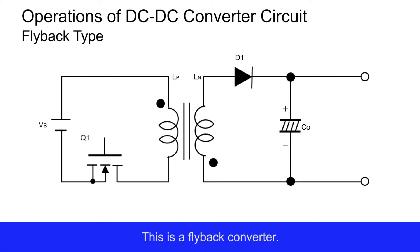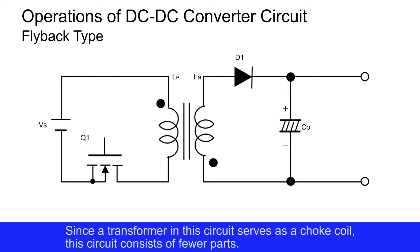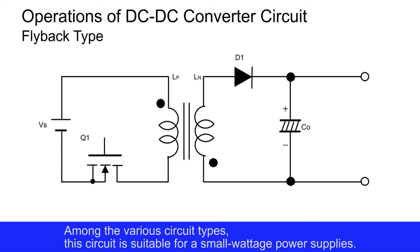This is a flyback converter. Since the transformer in this circuit serves as a choke coil, this circuit consists of fewer parts. Among the various circuit types, this circuit is suitable for small wattage power supplies.